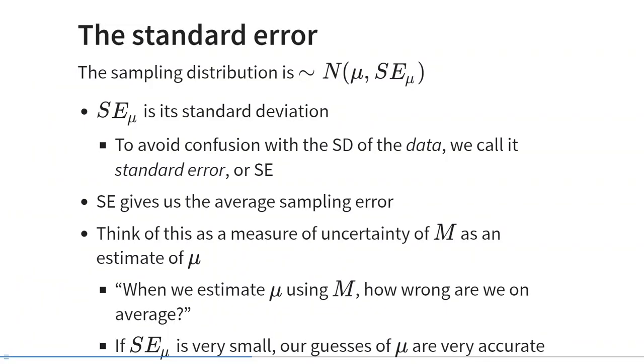Now let me introduce you to a very important concept: the standard error. I talked to you about the standard deviation of this hypothetical sampling distribution, and that standard deviation is so important that we've given it its own unique name to prevent confusion with the normal standard deviation — we call it the standard error. So the standard error is the standard deviation of the sampling distribution of a statistic. With this in mind, the sampling distribution is normally distributed with mean equal to the population mean mu and standard deviation equal to the standard error of the mean.